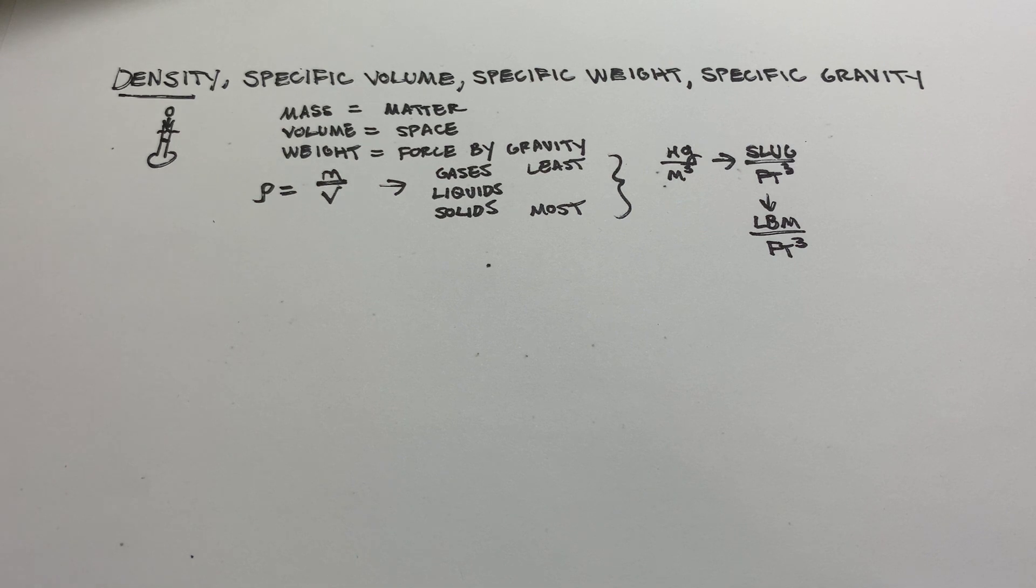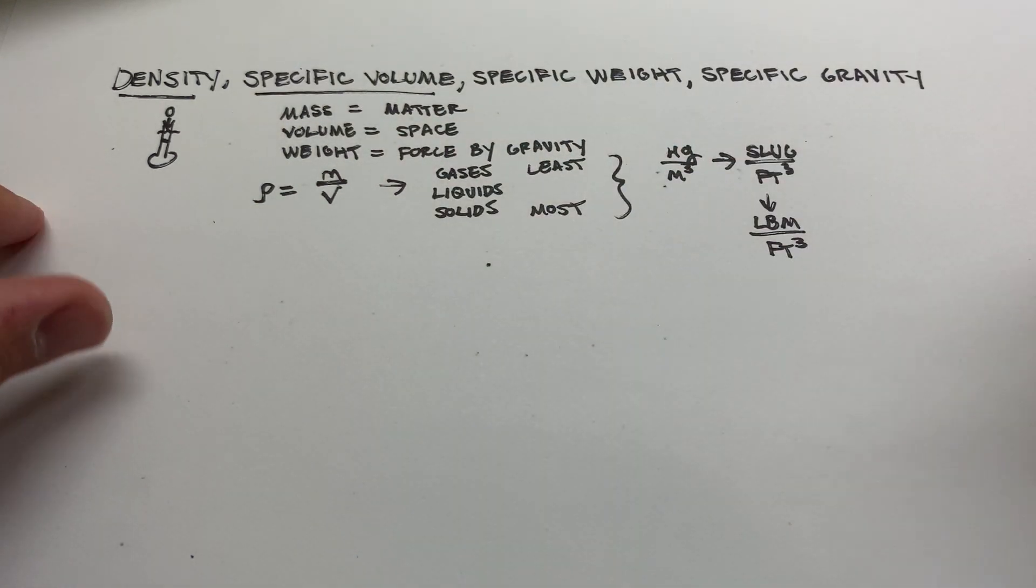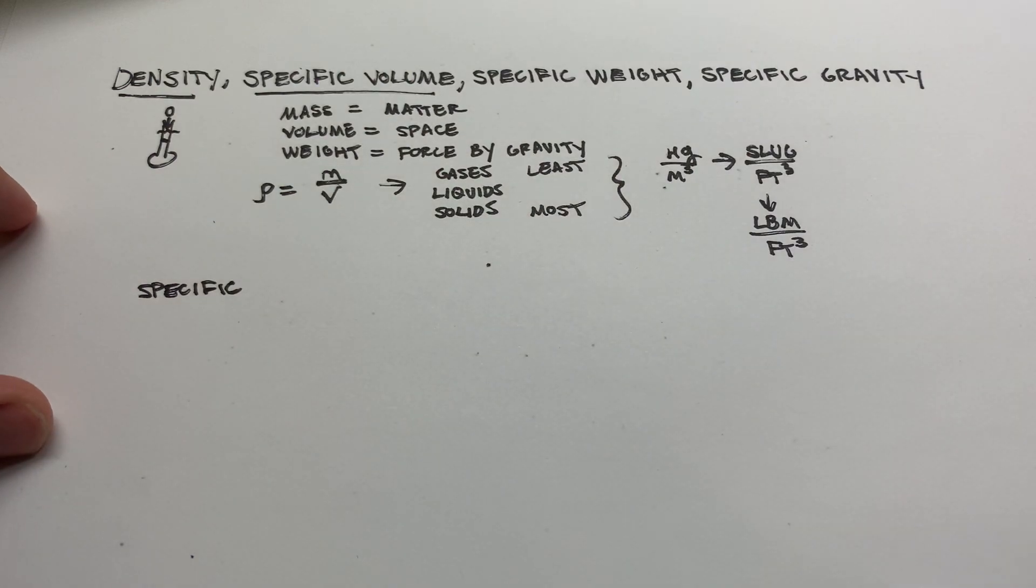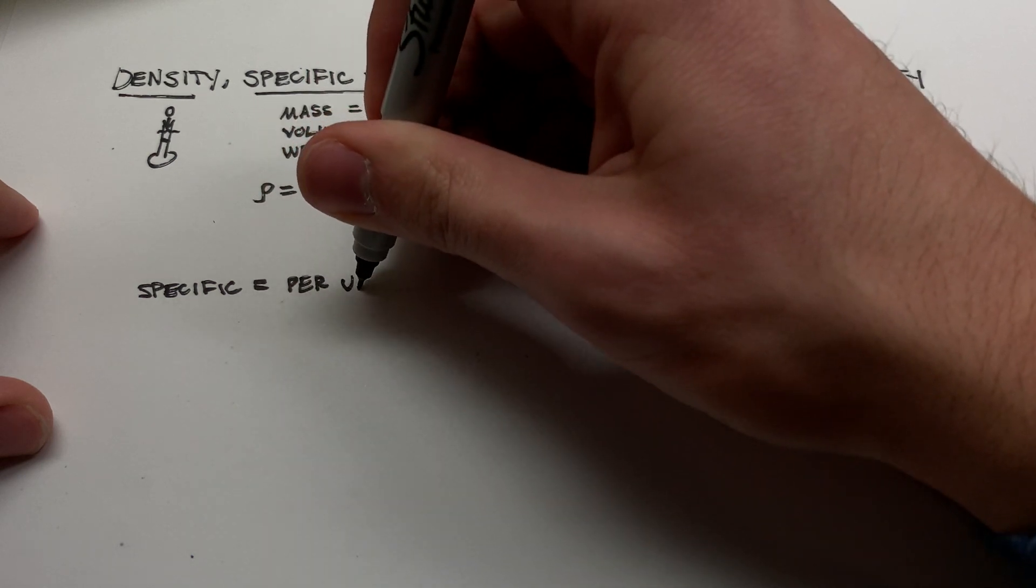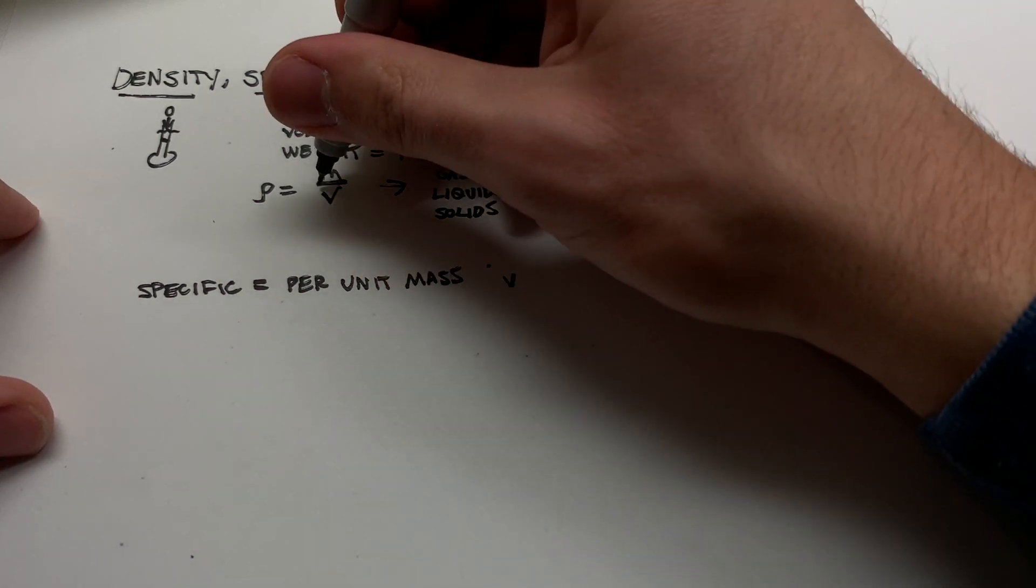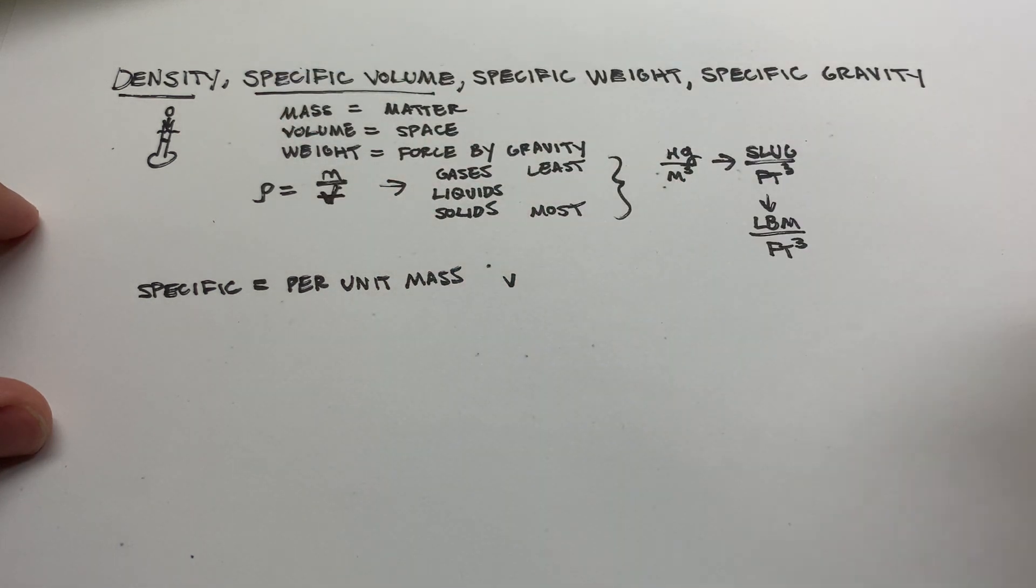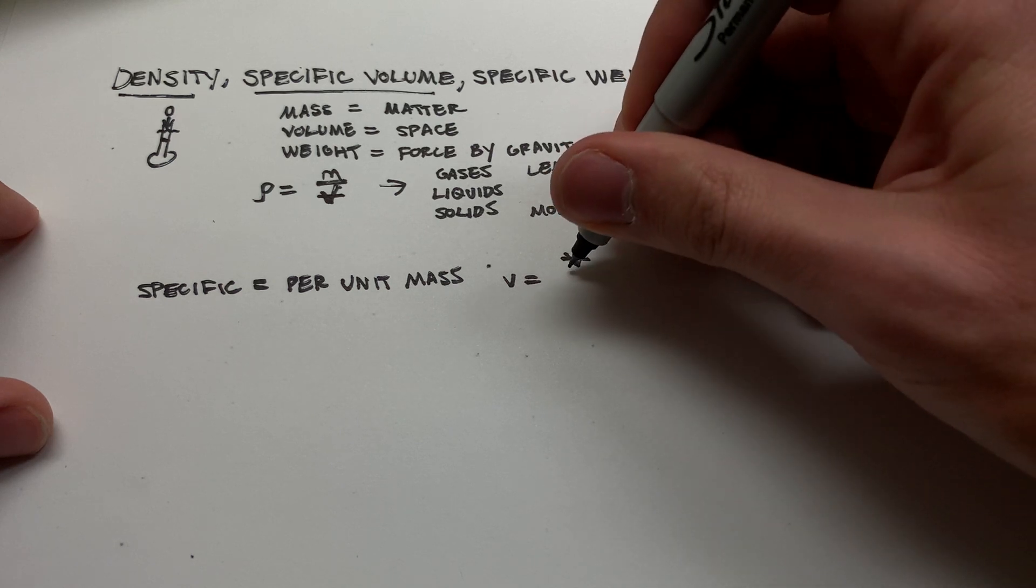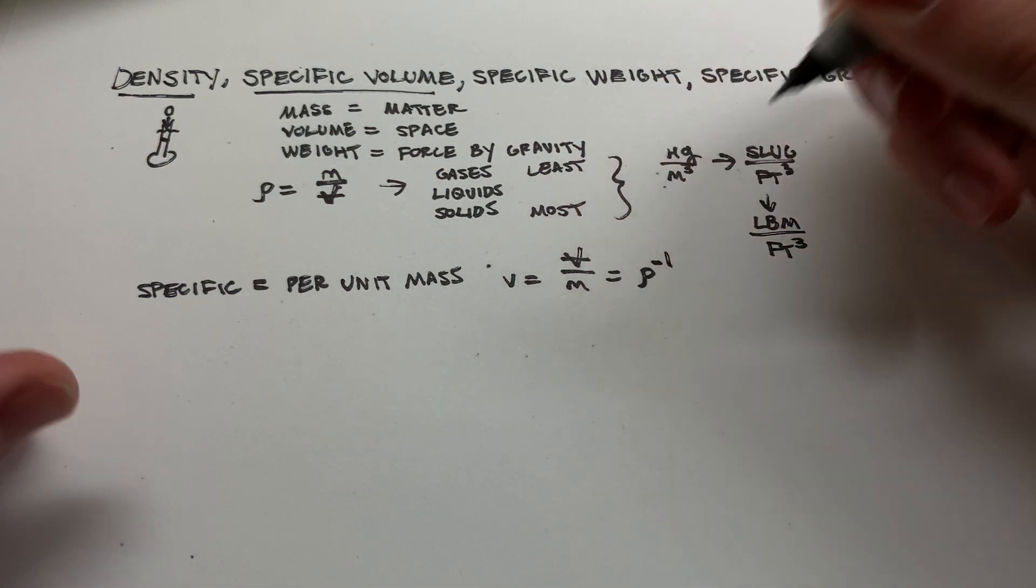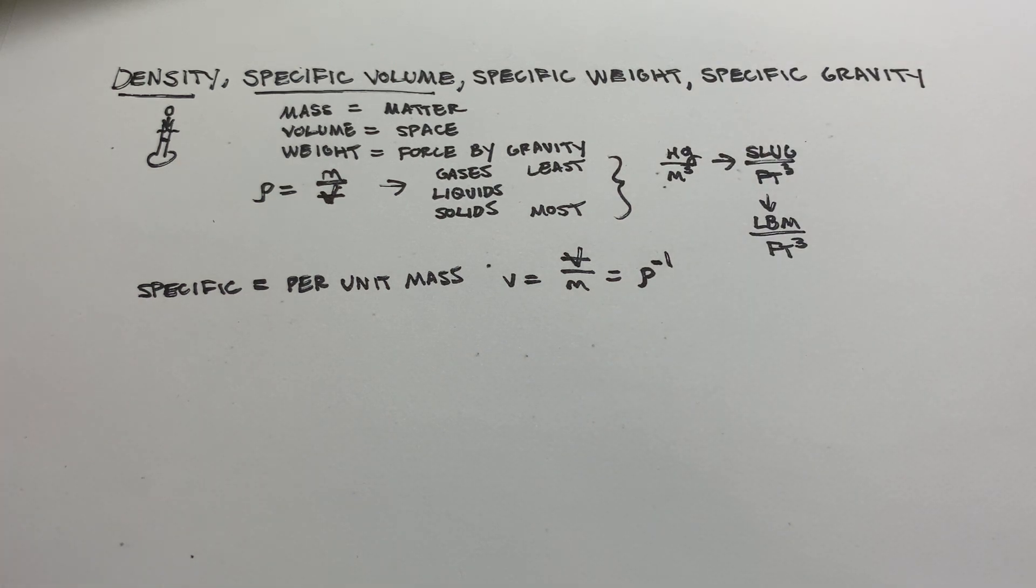But I'm getting a little bit ahead of myself, because we should talk about specific volume first. Specific volume is interesting. So when we say specific in this context, I don't know who started it. But for me, I see it in a lot of engineering disciplines. Specific indicates per unit mass. And all that the specific volume is, this is denoted by a lowercase v. Let's make it clear that this is an uppercase V there. This is a lowercase v. It's going to be equal to the total volume divided by the mass of something. And for those of you who are paying extra close attention here, you'll notice that that's equal to rho to the negative one, or one over rho. So it's the inverse of density.